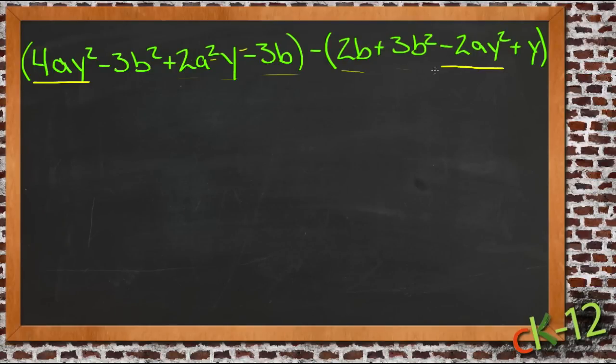But the second one here is being subtracted from the first one. This whole polynomial here becomes subtraction. So we're going to subtract a negative 2ay squared. So we have 4 minus negative 2ay squared. If we subtract a negative, that becomes addition.